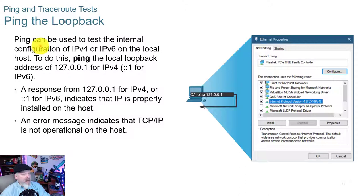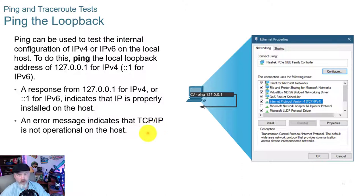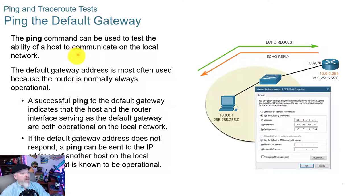Ping can test the internal configuration of v4 or v6 on the local host by pinging the loopback address: 127.0.0.1 for v4 or ::1 for v6. A response confirms IP is properly installed; no response indicates TCP/IP is not operational or there's an issue with the internal NIC. You can also ping the default gateway to confirm the host can communicate on the local network, verifying connectivity through any switches as well.